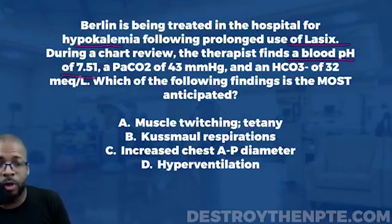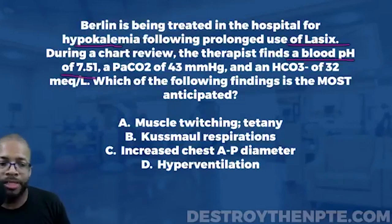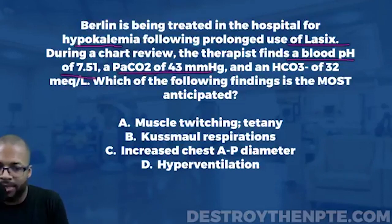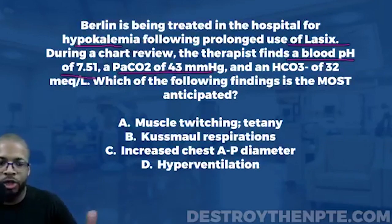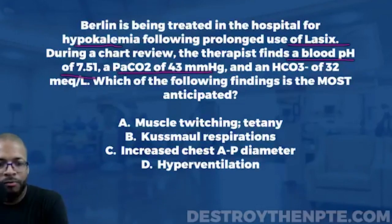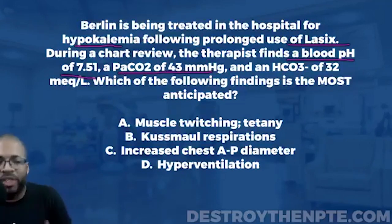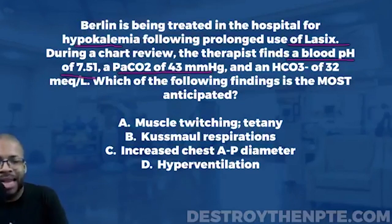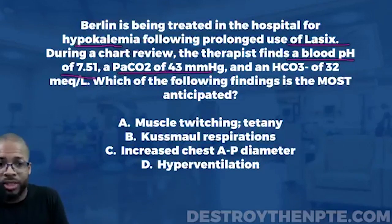The partial pressure of carbon dioxide is 43 mmHg. The normal range for CO2 is 35 to 45 mmHg. This value is within normal ranges, so it is not likely that we are dealing with a respiratory problem, because carbon dioxide is within normal limits.